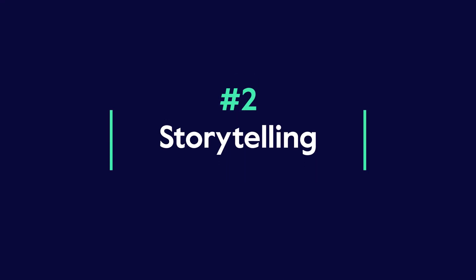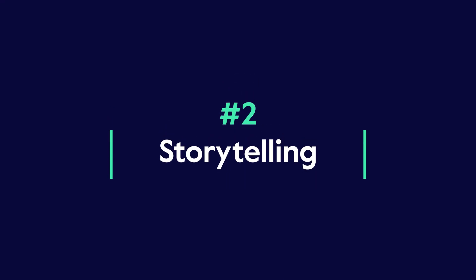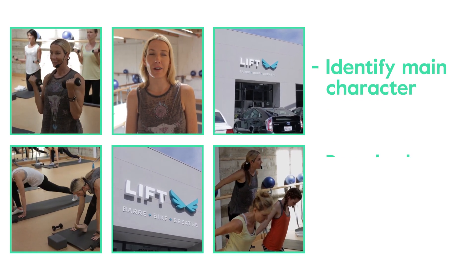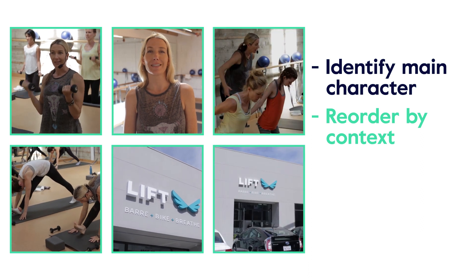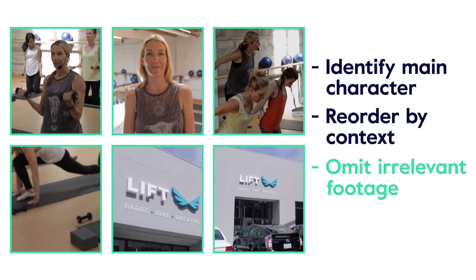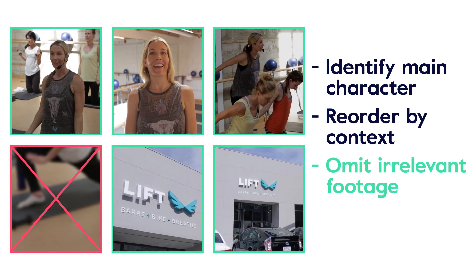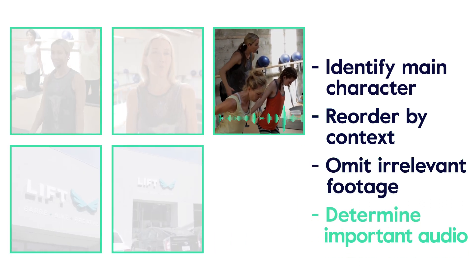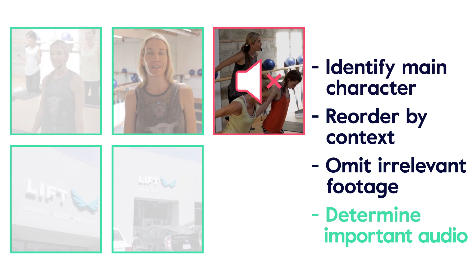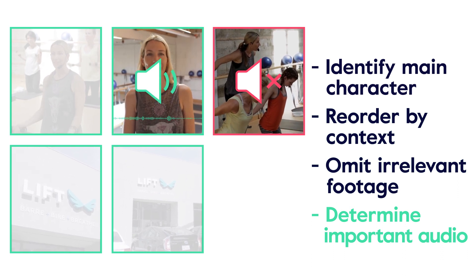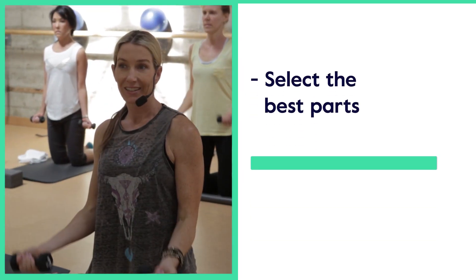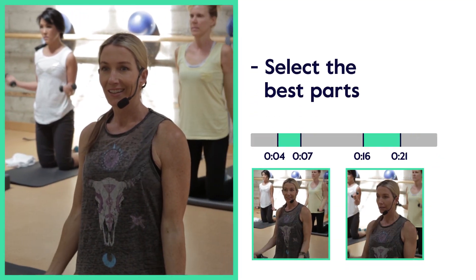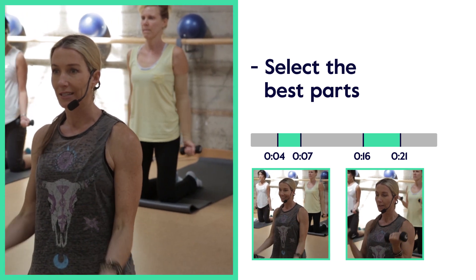The second step is storytelling. As part of its storytelling techniques, Magisto identifies the main character in the images and clips, reorders those images and clips by context, omits any poor or irrelevant footage, determines important audio portions, selects the best parts of your video to include in the story, and implements other comprehension methods in order to best tell your story.